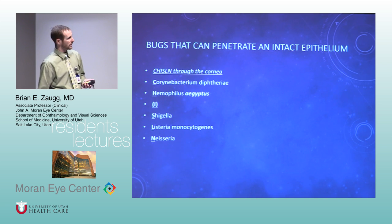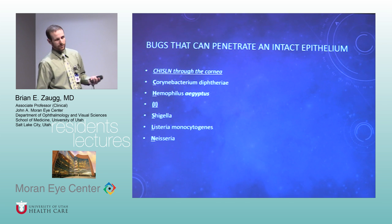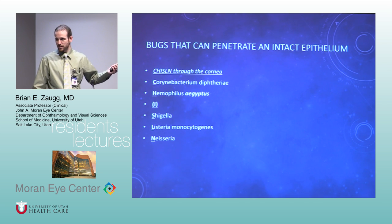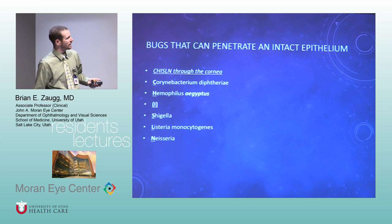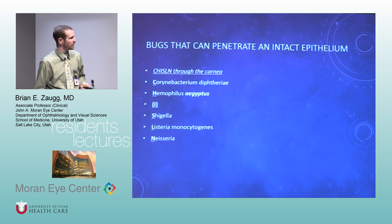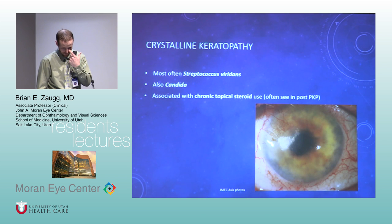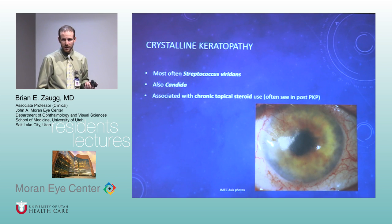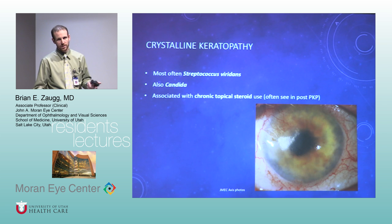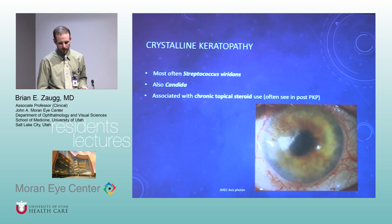Organisms that can penetrate an intact cornea — I try to remember a few. Gonorrhea is the one I worry about most. Corynebacterium as well. Crystalline keratopathy on a test is most commonly strep, but any infection or even steroid use can cause it.